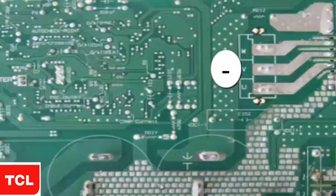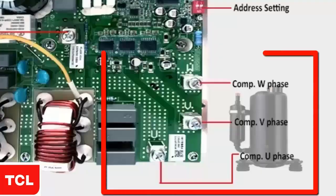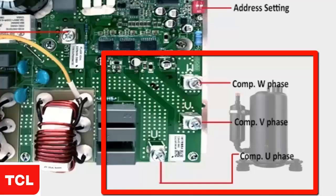Identify the output points UVW. These can be identified by following the tracks from the compressor connectors to the IPM electronic circuit.